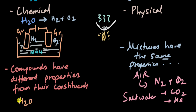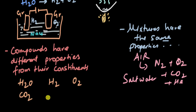But compounds have very different properties from their constituents. Water has different properties from hydrogen and oxygen — hydrogen and oxygen are both gases at room temperature, but water is a liquid. Oxygen supports combustion, but water has the opposite effect. Another example: carbon dioxide is made of carbon and oxygen. Carbon is solid at room temperature and oxygen is a gas, yet carbon dioxide is used in fire extinguishers to extinguish fire, while oxygen supports combustion — drastically different properties. That's why compounds have different properties from their constituents.